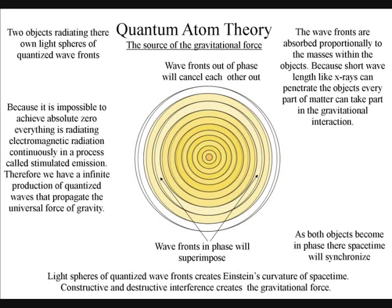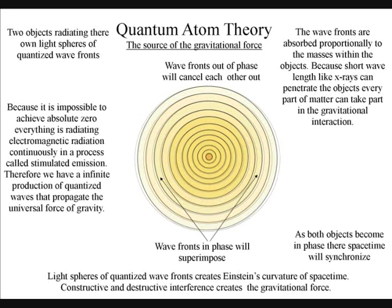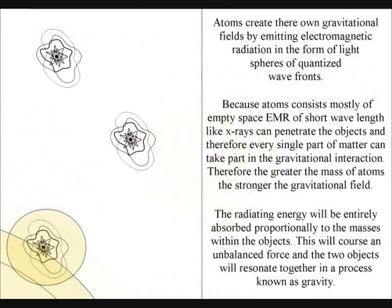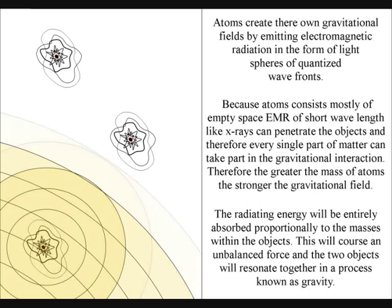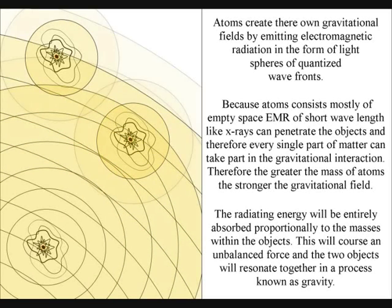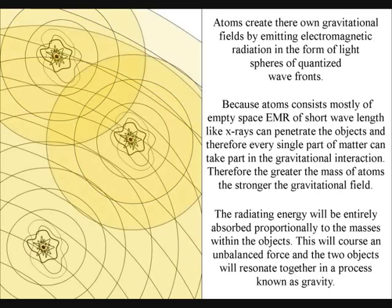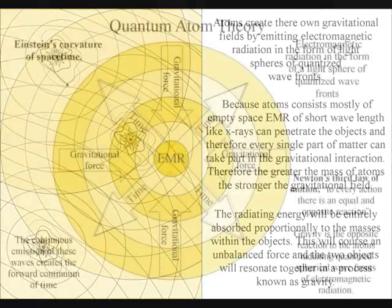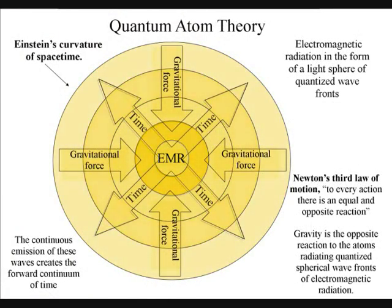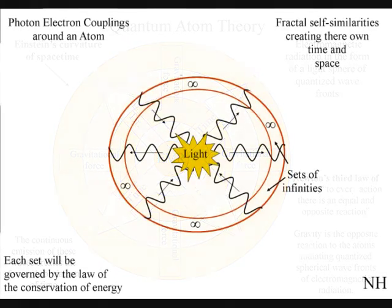Because atoms consist mostly of empty space, electromagnetic radiation of short wavelengths, like x-rays, can penetrate the object, and therefore every single part of matter can take part in the gravitational interaction. Therefore, the greater the mass of atoms, the stronger the gravitational force. The gravitational field will propagate at the same speed that electromagnetic radiation moves — the speed of light.